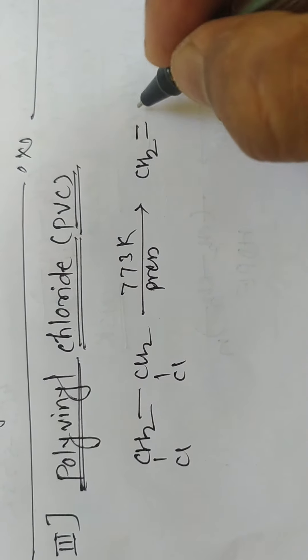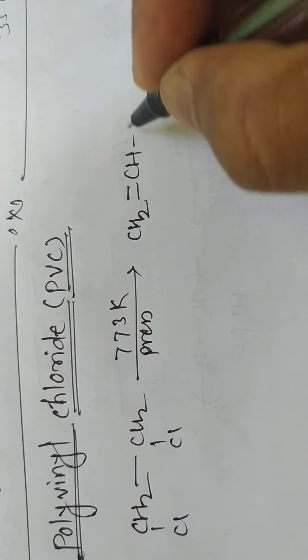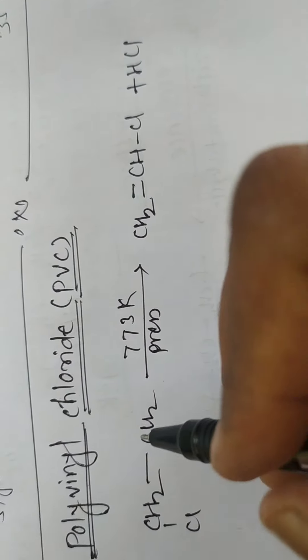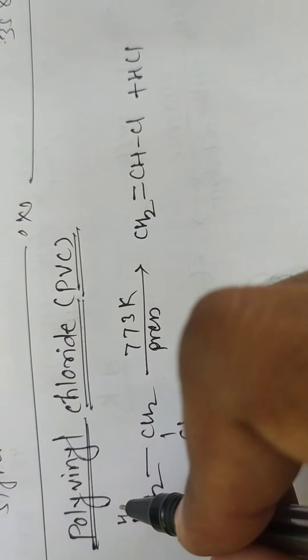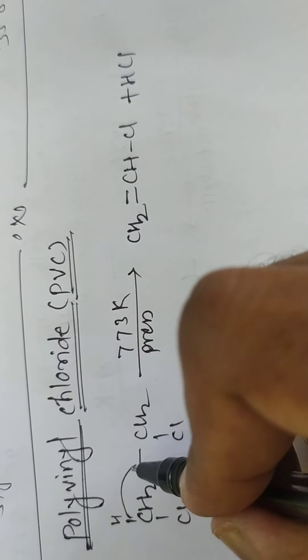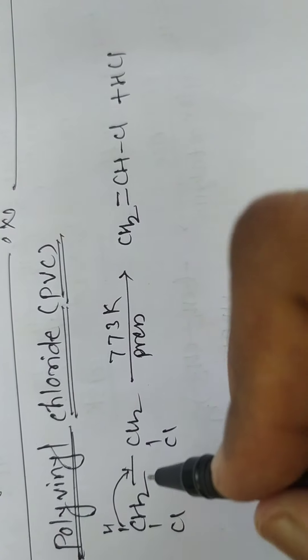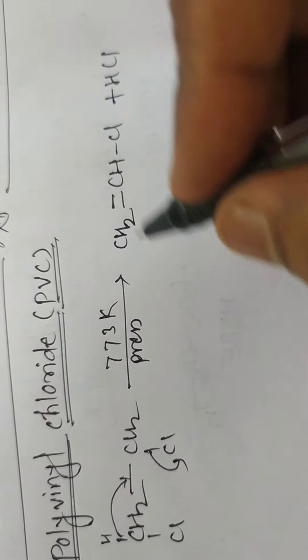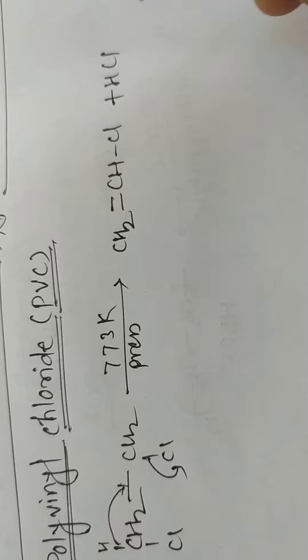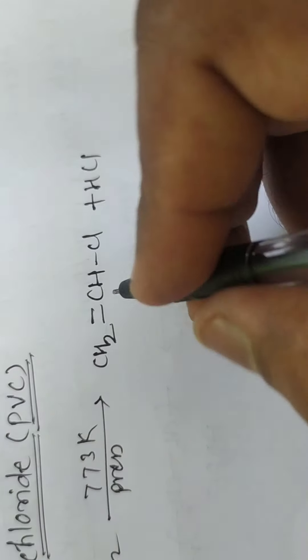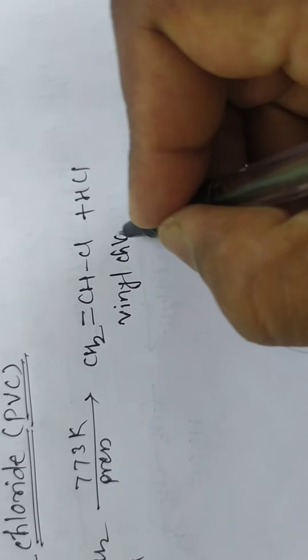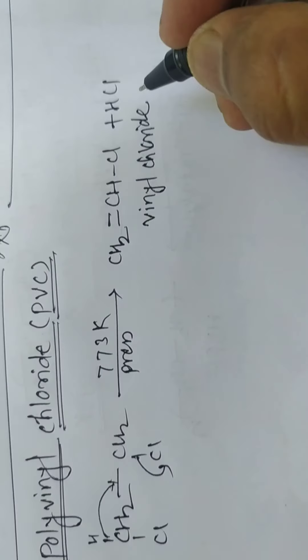We can obtain CH2 double bond CHCl and HCl is removed. Here one hydrogen from the CH2 and chlorine from this CH2 combines to remove HCl, and the formation of vinyl chloride takes place.